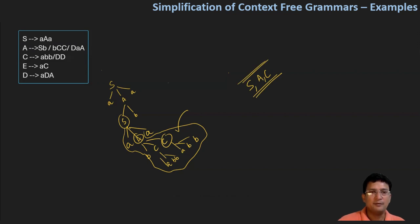Now let's consider another derivation. S produces aAa, and then A produces DAA. D does not expand to any terminal symbol - it cannot reach terminals. So D is a non-generating symbol and we need to eliminate it. We must remove productions involving D.